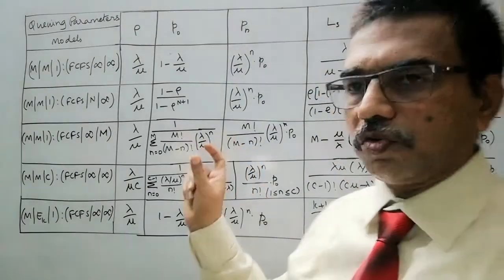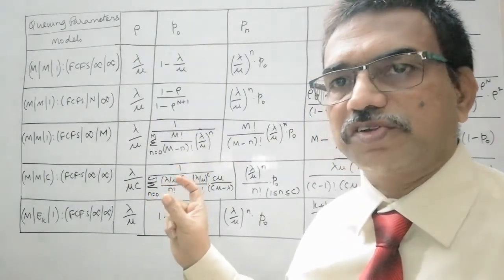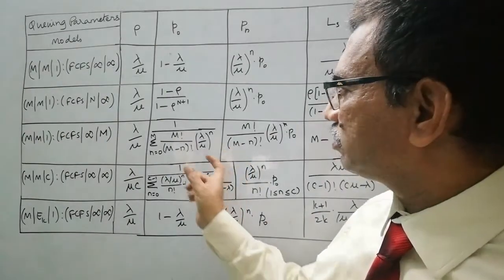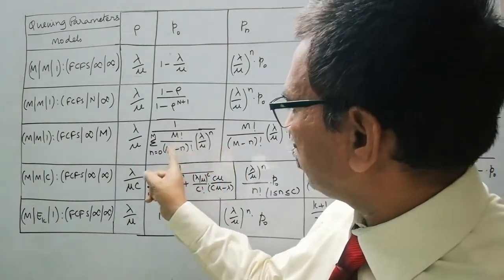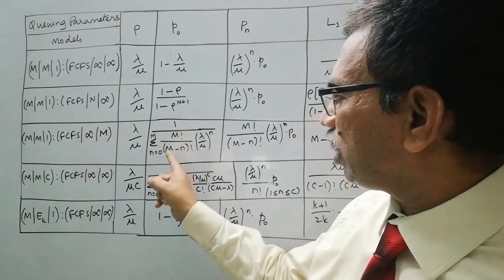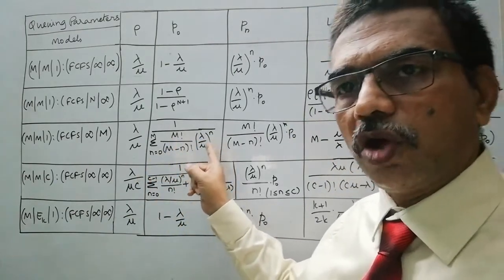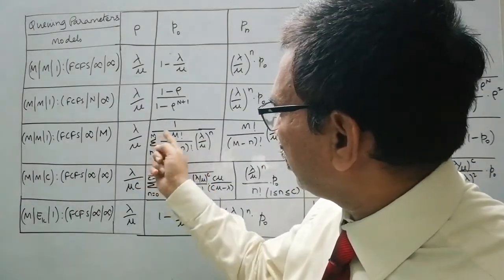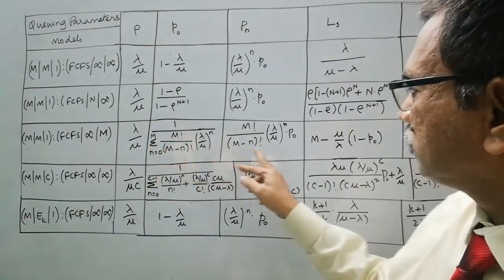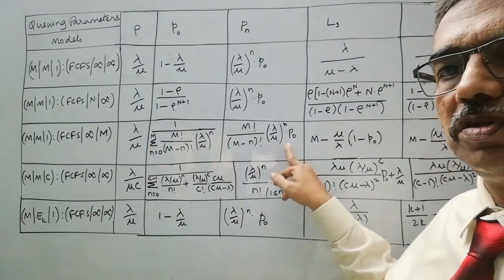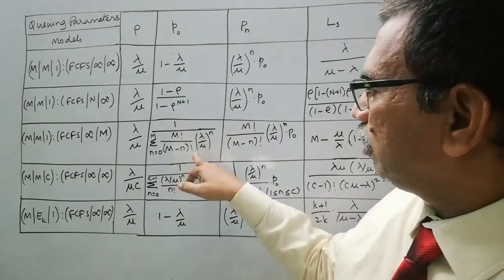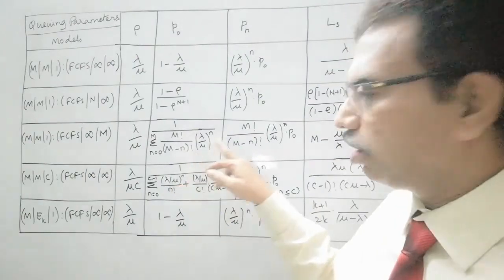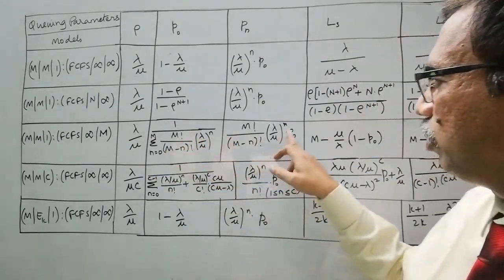Here, in order to remember easily the expressions for these parameters, we have to follow some trick, like see here, you can find the denominator, Σ m!/(m-n)! × (λ/μ)ⁿ, this is in the denominator, and excluding this Σ, this term appears here into P₀. So, for P₀, if we remember this formula, if we know this formula, for Pₙ, we can simply take the denominator part into P₀, like this.